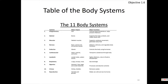Now let's give a brief introduction to the eleven body systems. They are: integumentary, skeletal, muscular, nervous, endocrine, cardiovascular, lymphatic, respiratory, digestive, urinary, and reproductive. Each of these systems is made up of major organs with major functions.